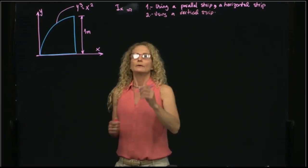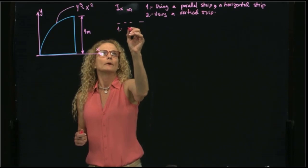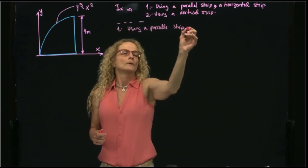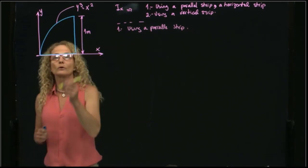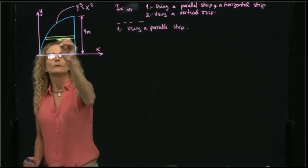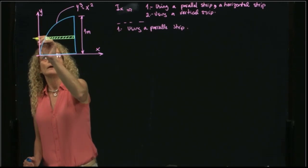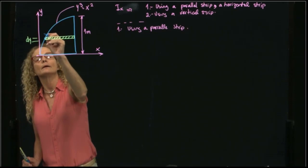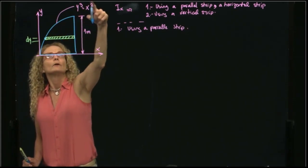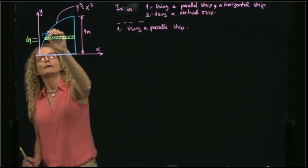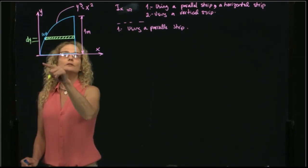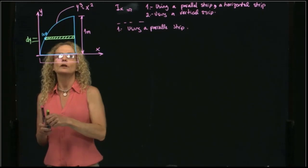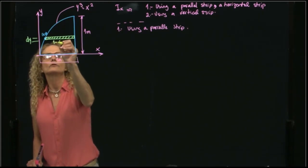Let's start by using a parallel strip, which is the horizontal. So I will use the horizontal strip. This is dy, and since this point right here is given by this function right here, this is xy, this is 1, therefore my strip is 1 minus x.